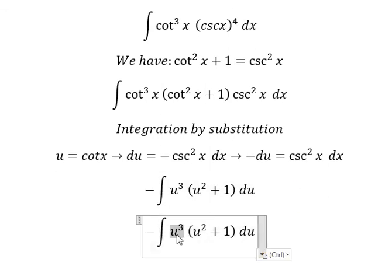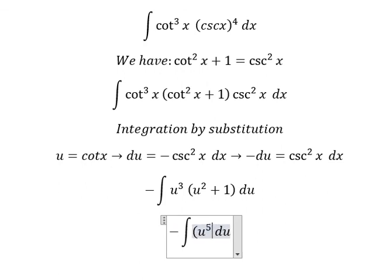So u³ multiplied by (u² plus 1) gives us u⁵ plus u³.